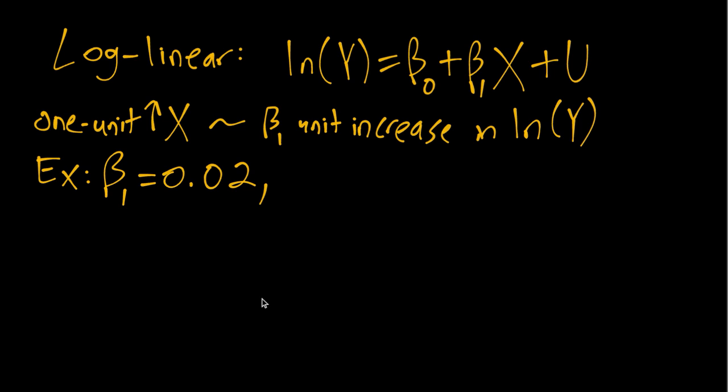If we think about the initial level of y and then the new level of y, which will be higher because beta_1 is positive, this means the 0.02 is the log of the new y minus the log of the original y.